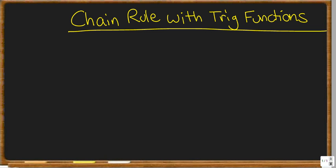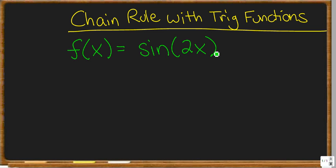We're going to talk about applying the chain rule with trig functions. It's very important to understand that a trigonometric function like sine or cosine is a function in its own right. Whatever is inside the brackets — we have to apply the derivative of that onto the end of our normal derivative. Let's look at an example: say our main function is the sine of 2x. We have to see this as two separate functions — the sine of a function, and this 2x on the inside.